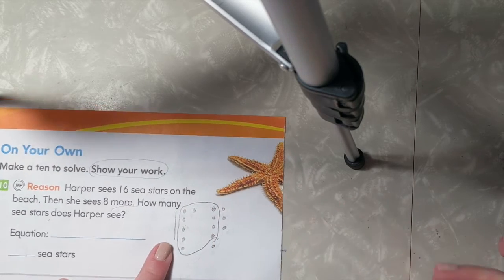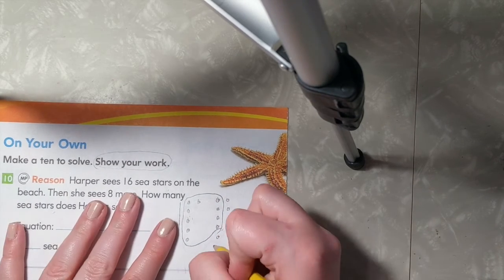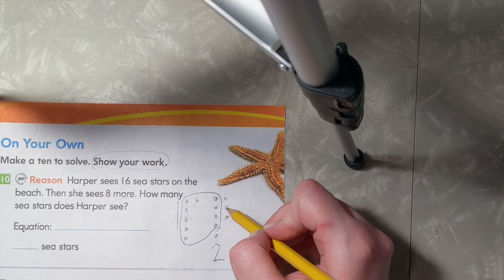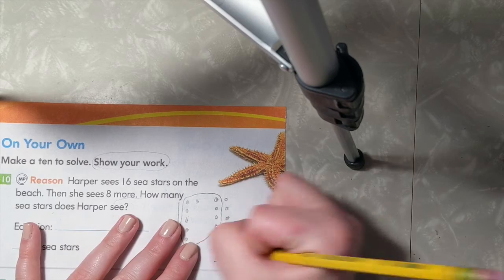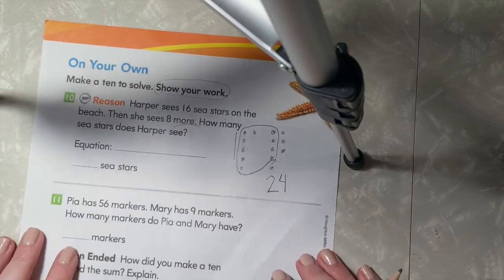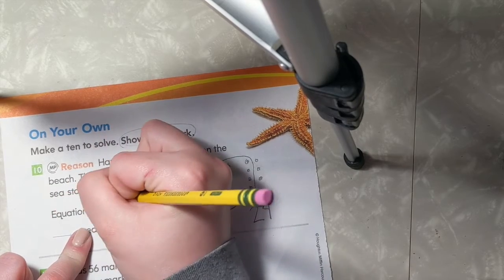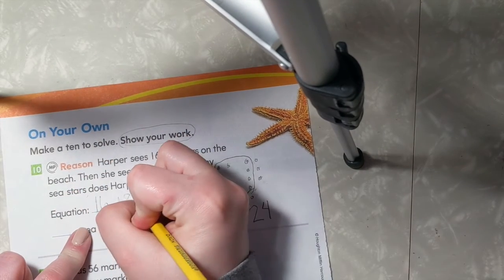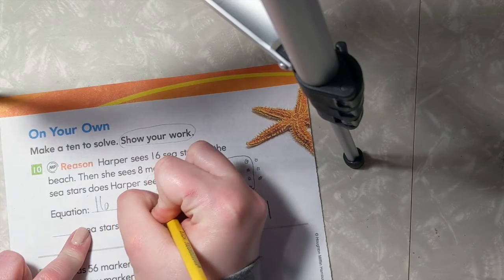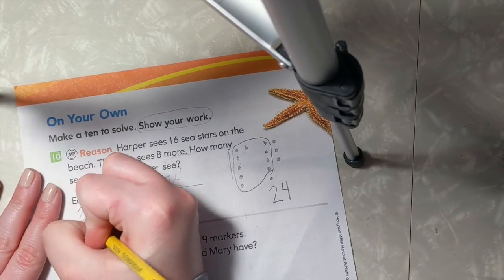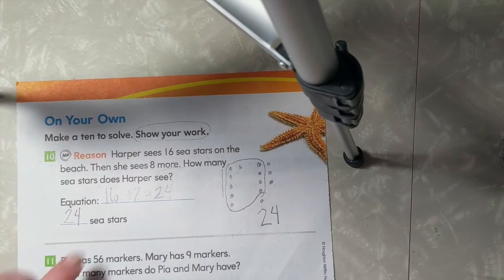6 plus 4 equals 10. So that gives me 2 groups of 10 plus 1, 2, 3, 4 to make 24. So our equation will look like 16 plus 8 equals 24. So Harper sees 24 sea stars.